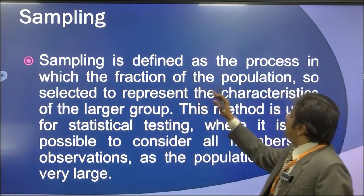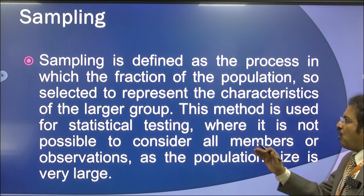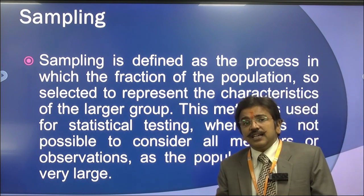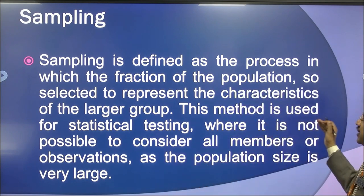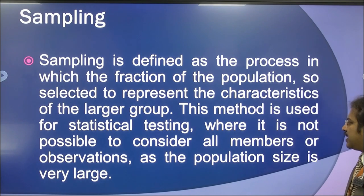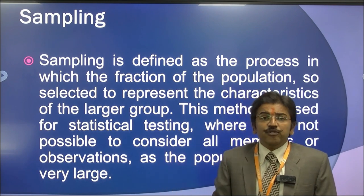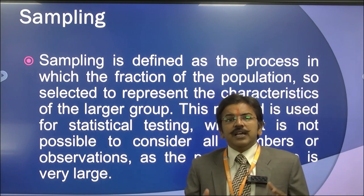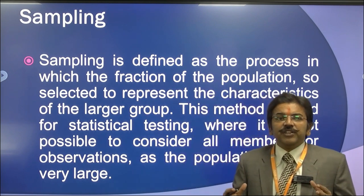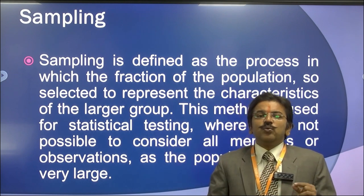What is sampling? Sampling is defined as the process in which a fraction of the population is selected to represent the characteristics of the larger group. We take a certain sample and assume it is a representation of a larger group. This method is used for statistical testing where it is not possible to consider all members of the population, as the population size is very large. For example, in Prayagraj there are more than 15 lakh people, so it is very difficult to go to each and everyone and collect the data.